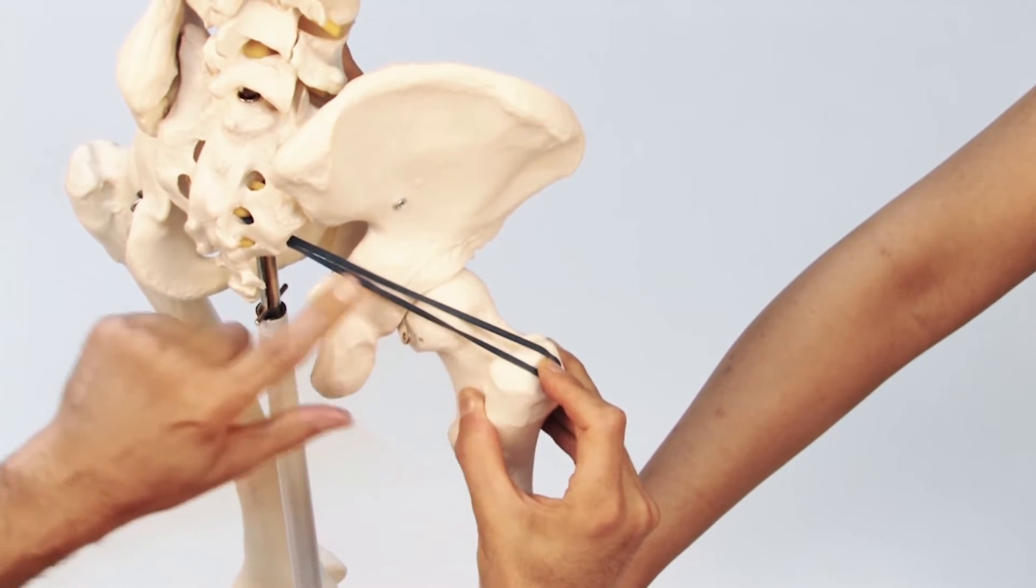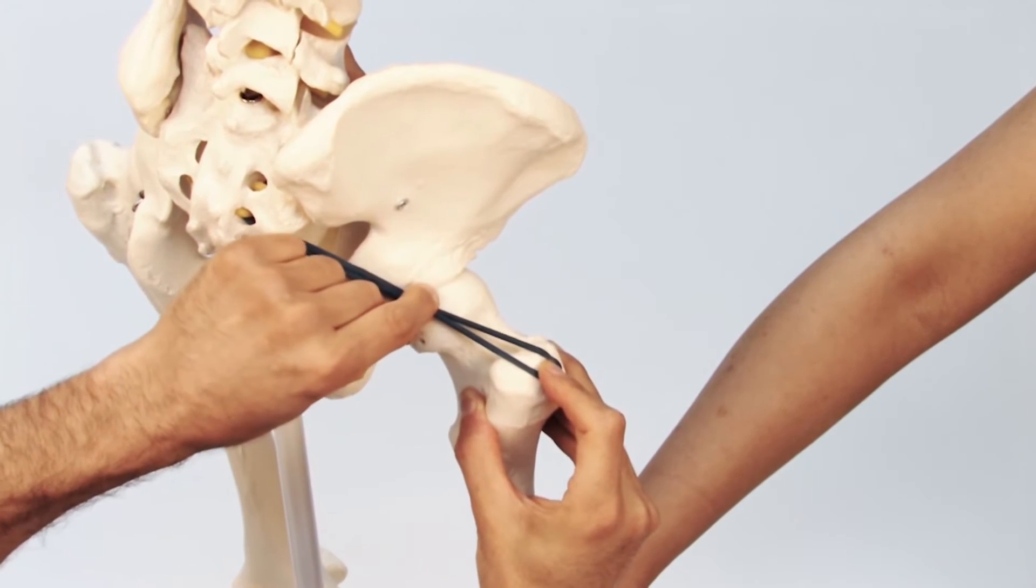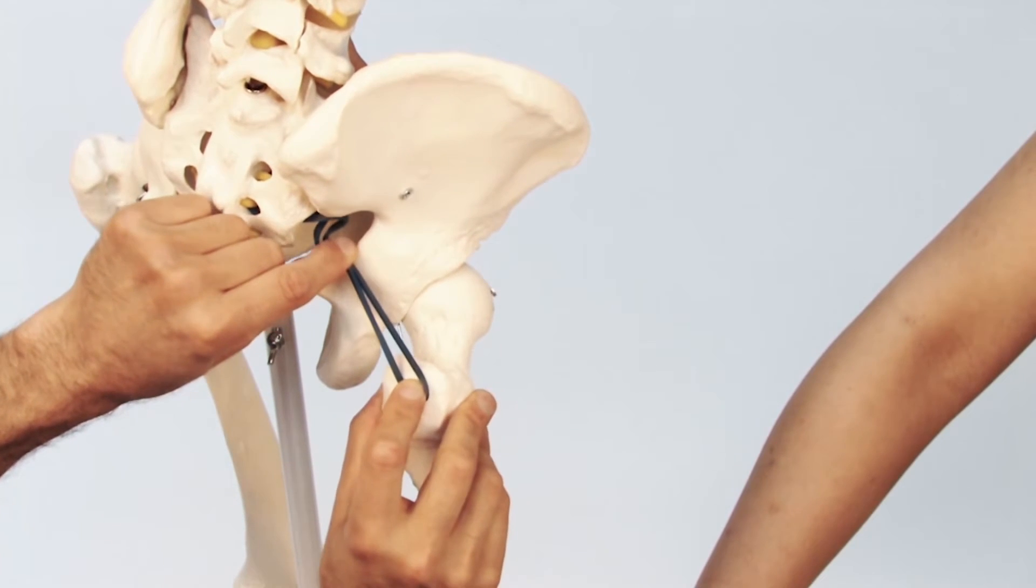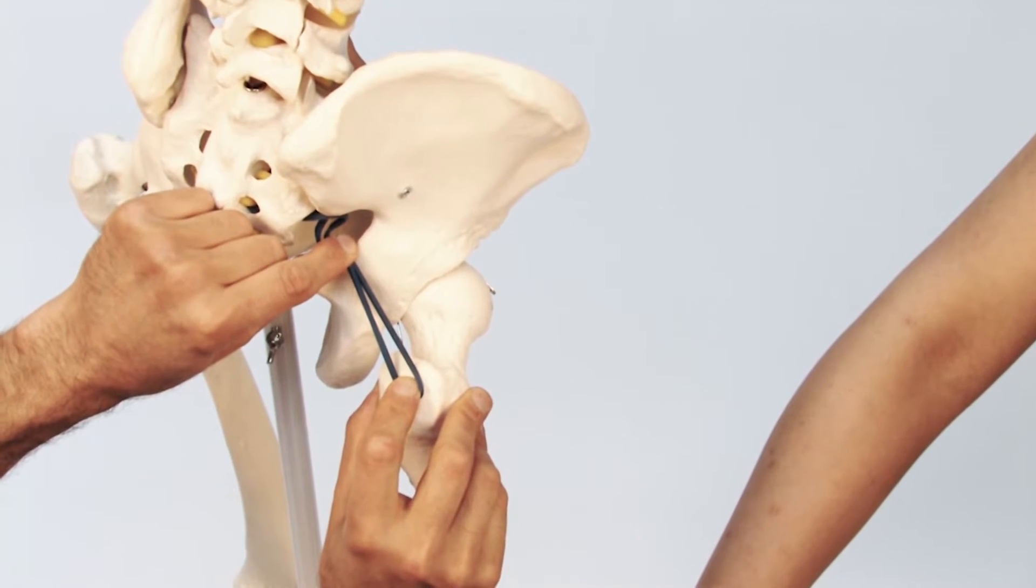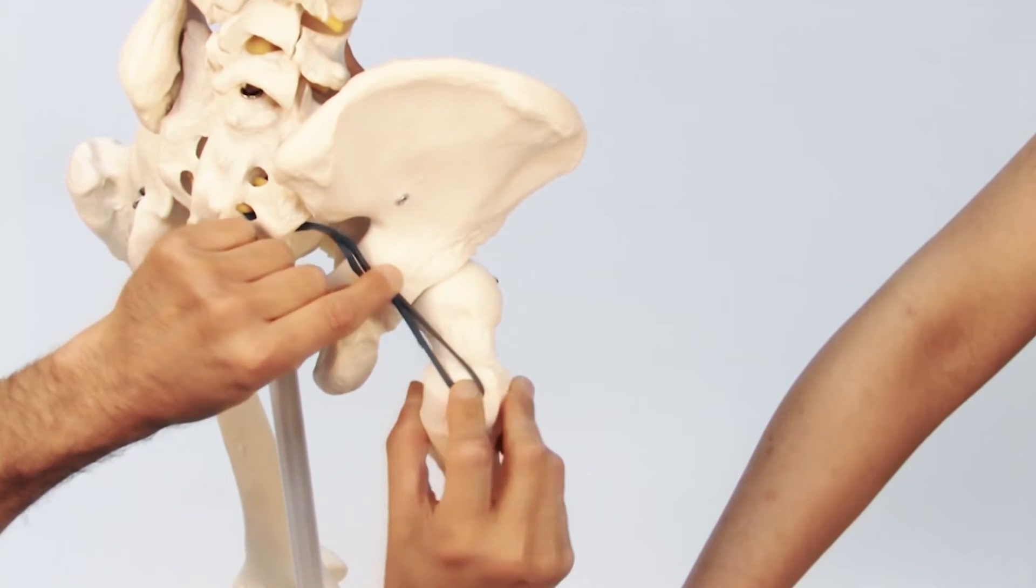When the femoral attachment is pulled toward the sacral attachment, the piriformis laterally rotates the thigh at the hip joint, and indeed it's known as a deep lateral rotator.